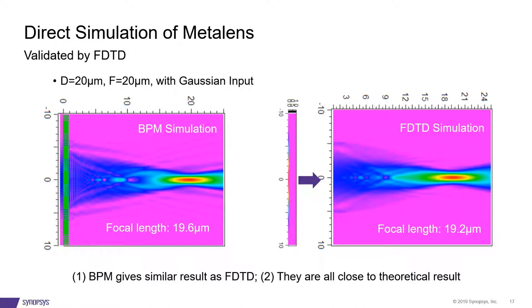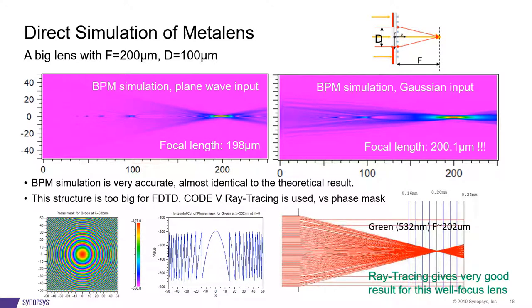Now that we understood the effects at a small scale, we are moving to a big lens with an F of 200 microns and an aperture distance of 100 microns. For this, a simulation using a plane wave input gives a simulated focal length of 198 micrometers. However, when we switch to a Gaussian input, we got an even better result, 200.1 micrometers. With these results, we can claim that BPM simulation is very accurate. Compared to the theoretical results, both numbers are almost identical.